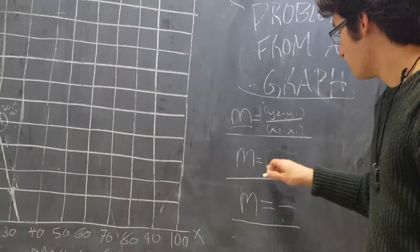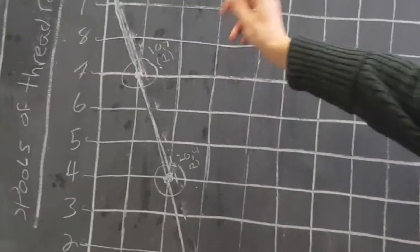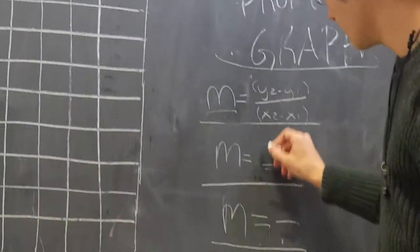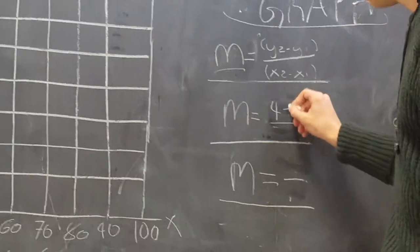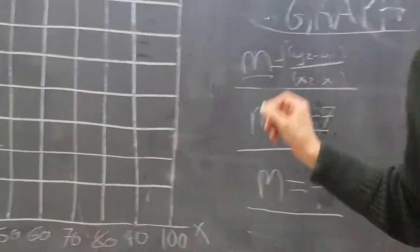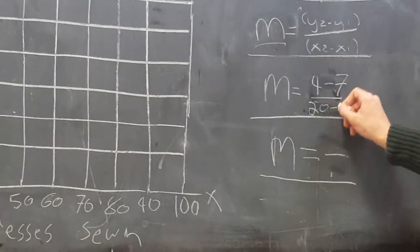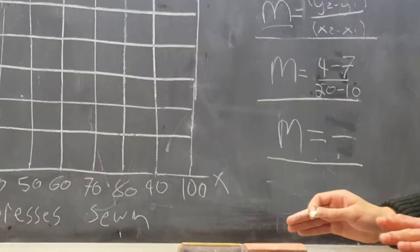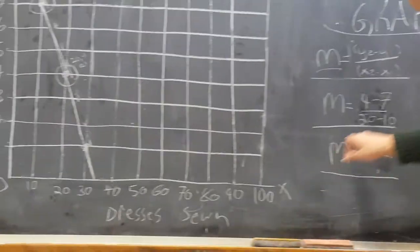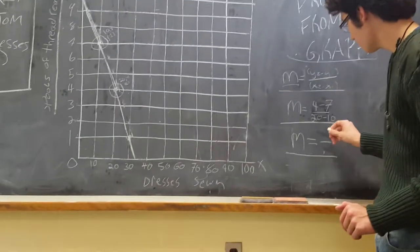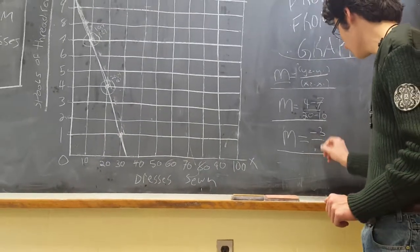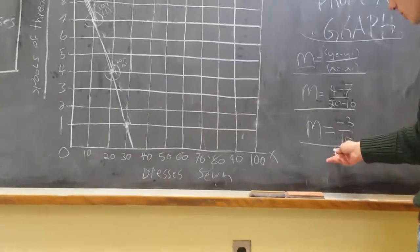So what you do is you plug in the numbers. So this we have 10, 7, and 24. So you divide the 2, so that would be 4 minus 7 for the y change, and down here you have 20 minus 10 for the x change. So subtract those two, and you get negative 3 over 10. And that is your slope.